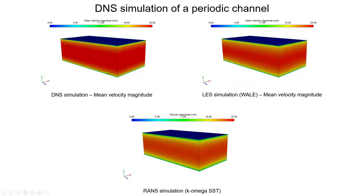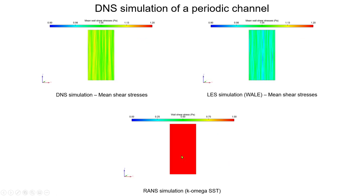We can see all these figures and there are some clear differences between DNS, LES, and RANS simulation results. When we look at the solution knowing that the wall shear stress should be one Pascal, the RANS solution is basically getting the exact solution. The model has essentially been calibrated to achieve that.